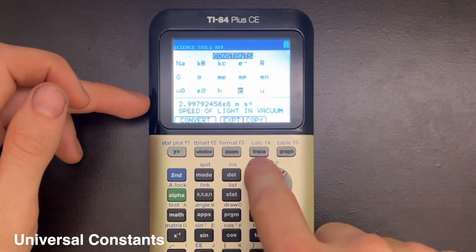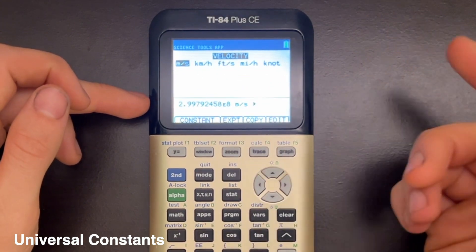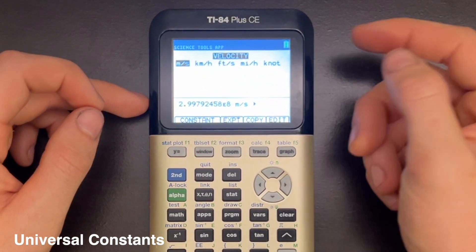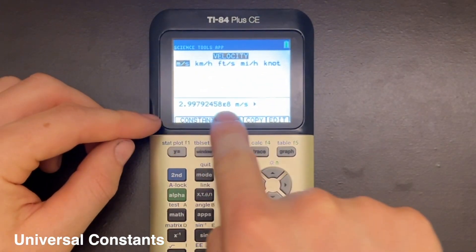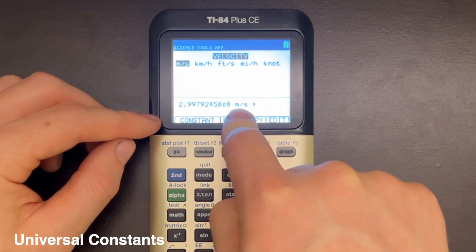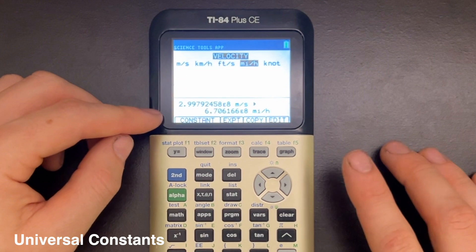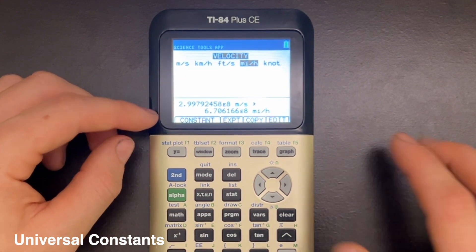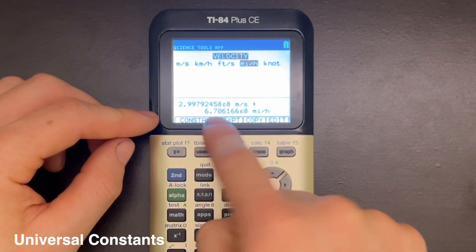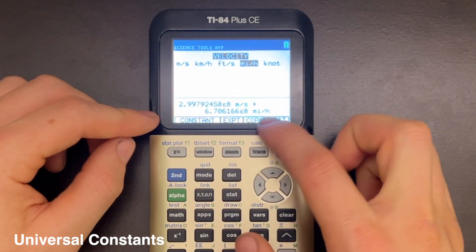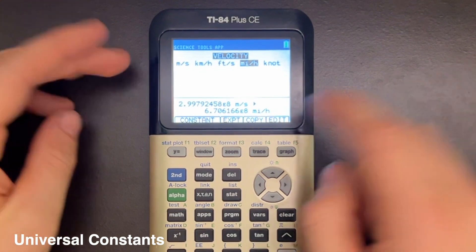You can just press Trace for Copy and then it will automatically bring up the velocity unit conversion section of the app and place the speed of light in meters per second here in the input window. And I can scroll over to miles per hour and select that and it'll give me the speed of light in miles per hour, which it's saying is 6.706 times 10 to the 8 miles per hour. So that's pretty convenient.